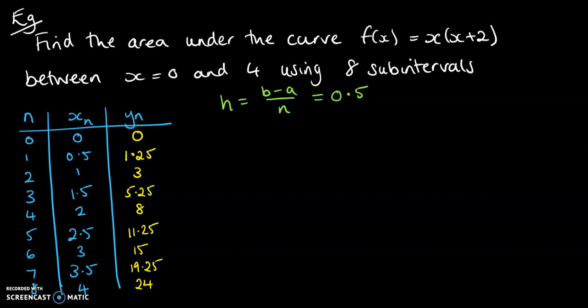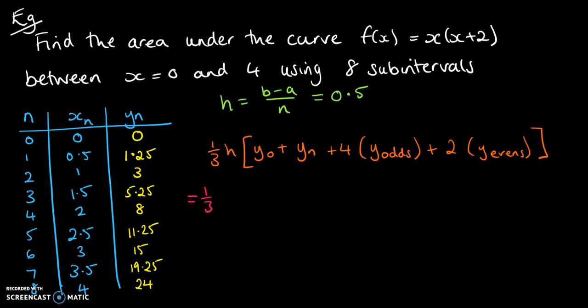Now we're ready to apply Simpson's rule. So we've got Simpson's rule looks like this. I've just abbreviated that sum of the odds, sum of the evens, and then put them into our Simpson's rule. We've got a third multiplied by the height, which is 0.5 here. Y zero is zero. Y n is 24.